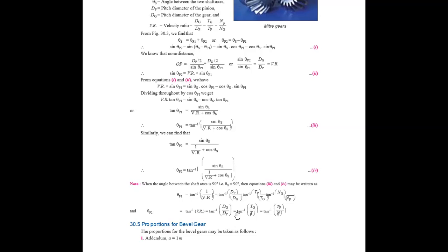When the angle between the shaft axes θs = 90°, sin 90° = 1. So θp1 = tan⁻¹(1/VR) = tan⁻¹(dp/dg), where dp/dg = Tp/Tg = Np/Ng.